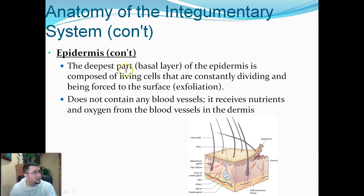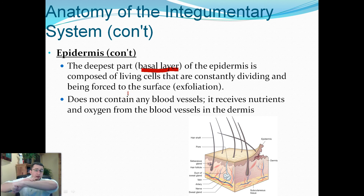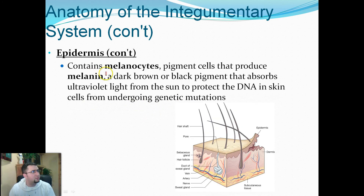The deepest part of the epidermis is called the basal layer, where living cells are actually dividing. As those living cells divide, they push the old dead ones out, and that's how we get skin forming in different layers. The epidermis has really no blood vessels — it receives nutrients and oxygen from the dermal layer, but the epidermal layer itself does not contain many blood vessels.